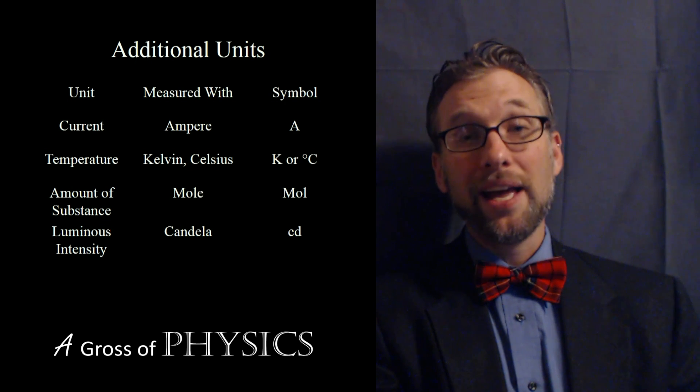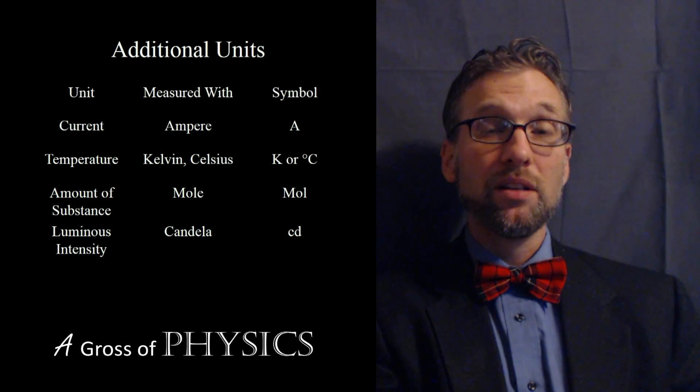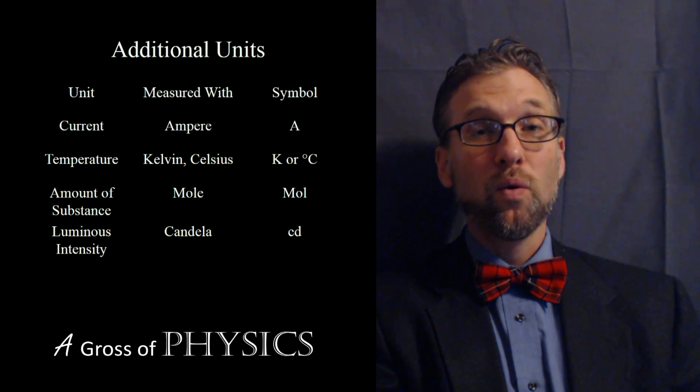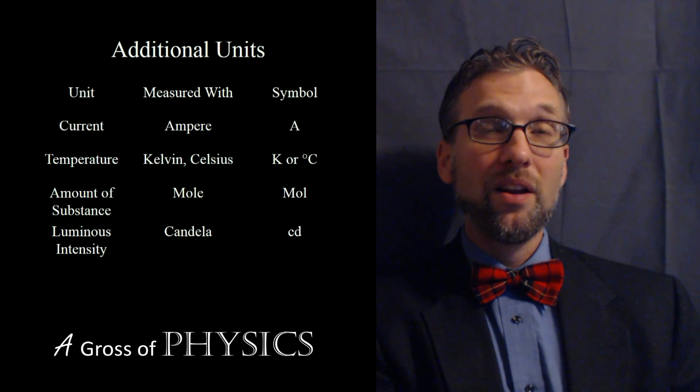So with length, mass, and time, we add current, temperature, amount of substance, and luminous intensity to have our seven basic units for the metric system.